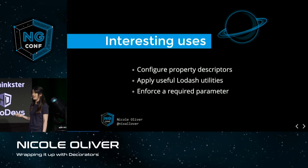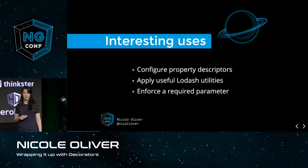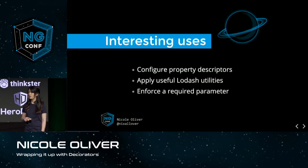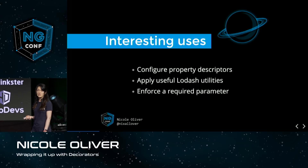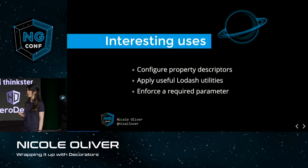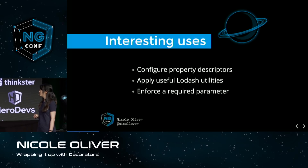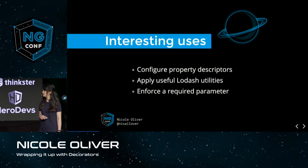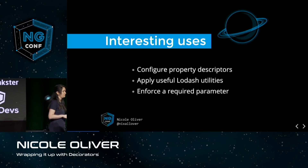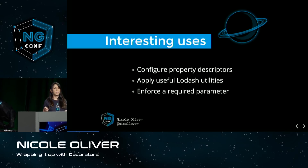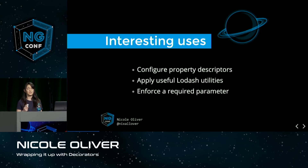What are some interesting use cases for why we want to create a custom decorator in our application? We could use decorators to configure property descriptors, which gives us fine-grained control over our object properties. We could wrap and apply useful Lodash utilities like memoize, debounce, or throttle. Or we could enforce a required parameter, throwing an error if that parameter is not passed in — all in a clean and easy-to-understand fashion.